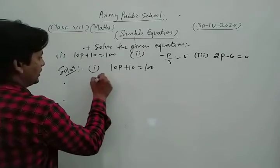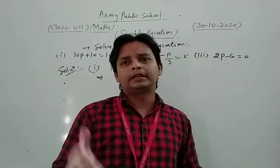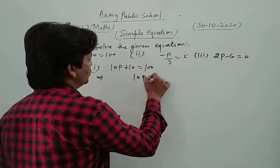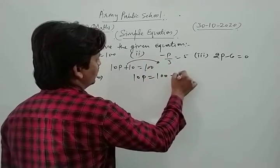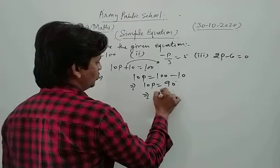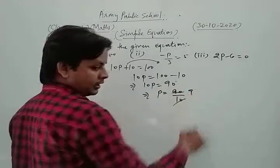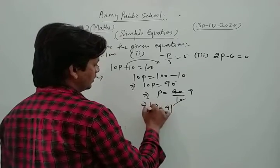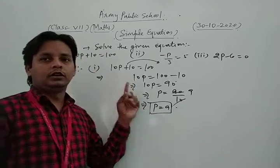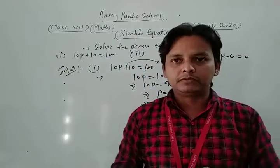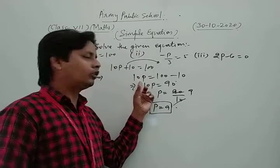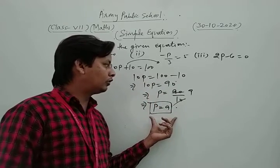The method: first of all, we separate the variable. We write 10p is equal to 100 minus 10, which is 90. So we get 10p is equal to 90, and dividing both sides by 10, the value of the variable p is 9. This is our required solution of the given equation — find the value of the variable, which is 9.